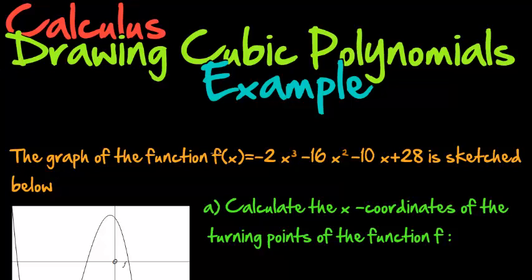Now in this example we are told that the graph of the function f(x) is equal to negative 2x cubed minus 16x squared minus 10x plus 28 and it's sketched below.